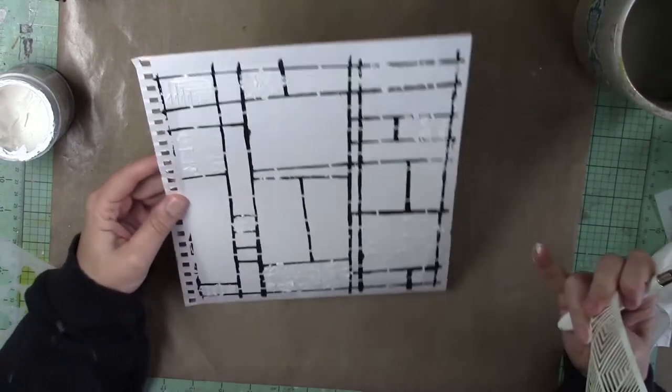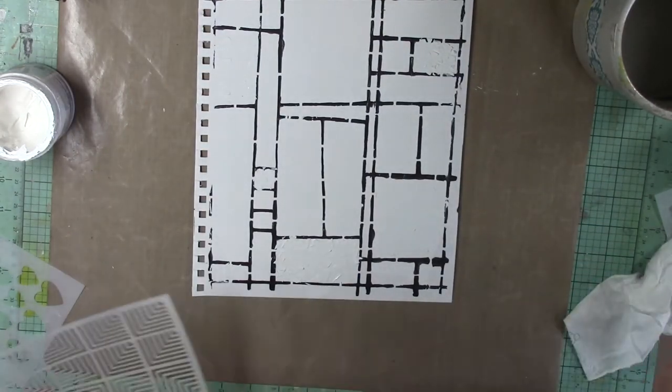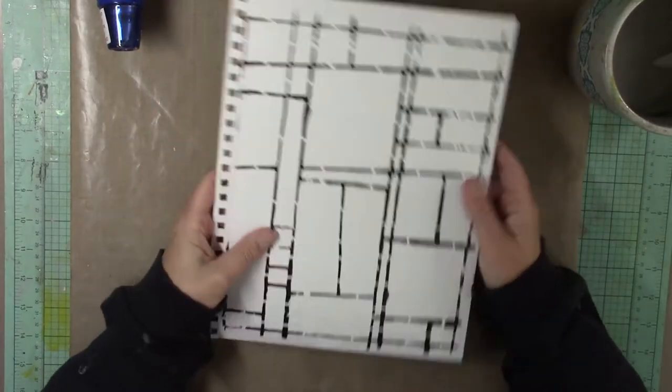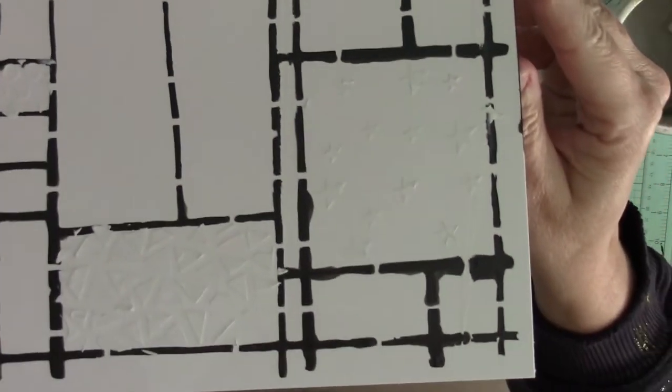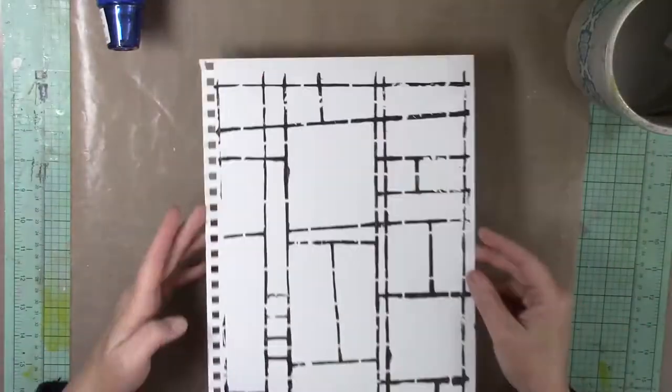I have almost all the squares done that I want to. I didn't fill in all of them because some I want to have just plain paint on them. Then I zap it with my heat gun to make sure it's dry. You can see some of the texture created with the super heavy gesso.